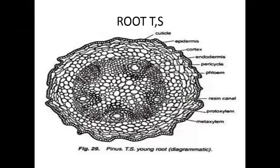The inner cortex is made by normal parenchyma tissue. They are loosely arranged and maintain intercellular spaces. These cells are helpful in storage of starch food material.